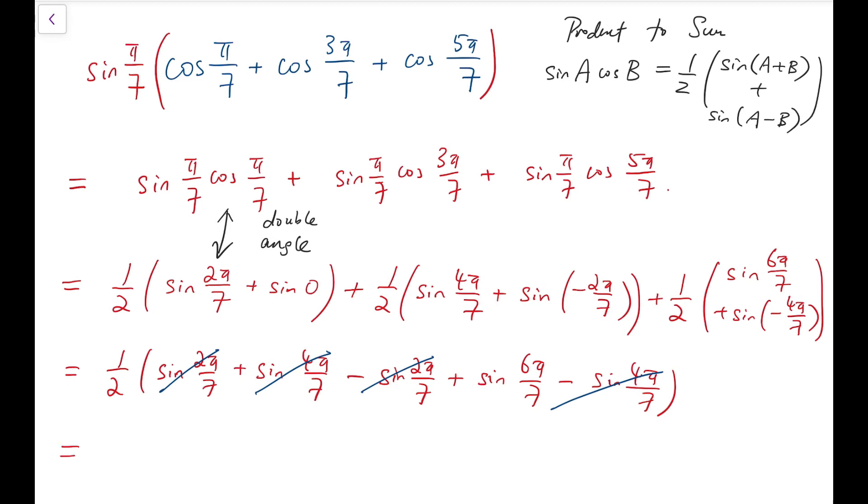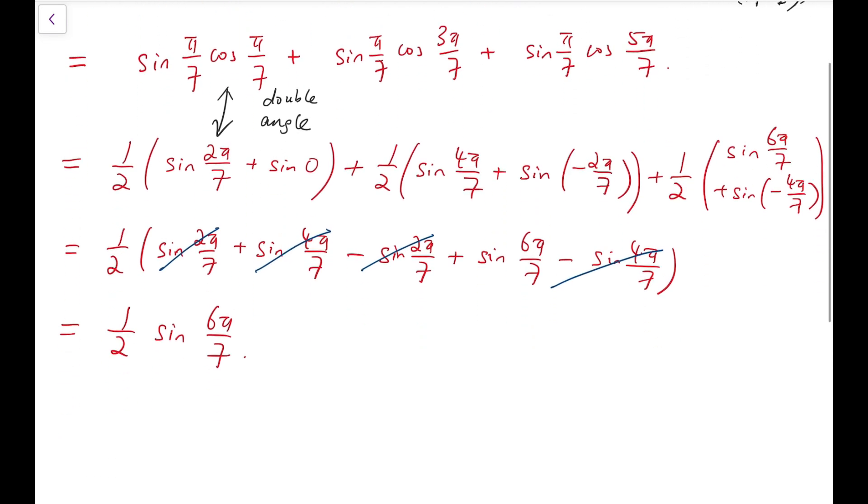So at last, we have a half of sine of 6π over 7. Now notice that this expression can actually be written as half of sine of π minus π over 7. Recalling that sine of π minus θ, supplementary angles, are equal under sine. So that means we have half of sine of π over 7.